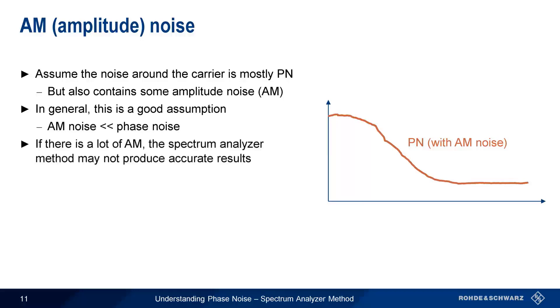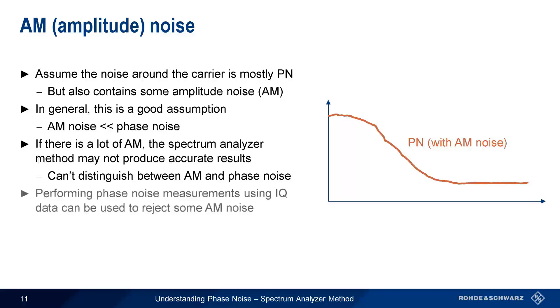If a large amount of amplitude noise is present, the standard spectrum analyzer method may not produce accurate results, because this method cannot distinguish between AM and phase noise. Separate measurements of AM and phase noise usually require the use of a different instrument, that is, a dedicated phase noise analyzer, but a traditional spectrum analyzer can reject some AM noise if the measurement is made with IQ data.